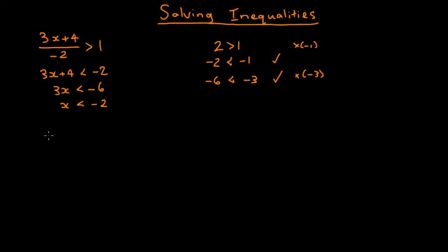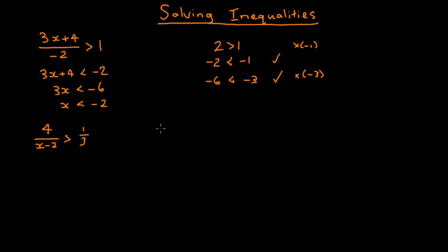We'll try another example now. So we'll take 4 divided by (x minus 2) is greater than 1 over 3. Again we have a fraction, and this time the denominator is x minus 2. The first thing to say is that we can't let this denominator be 0, which happens when x is 2. So we're only dealing here with x values that are not equal to 2.